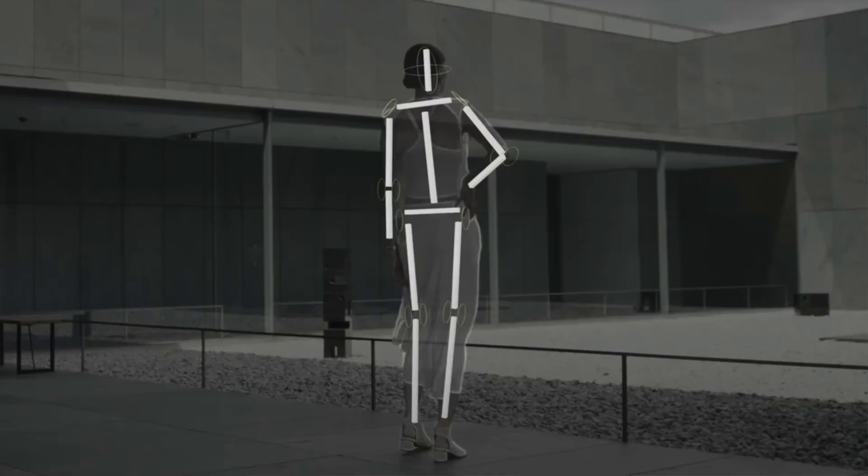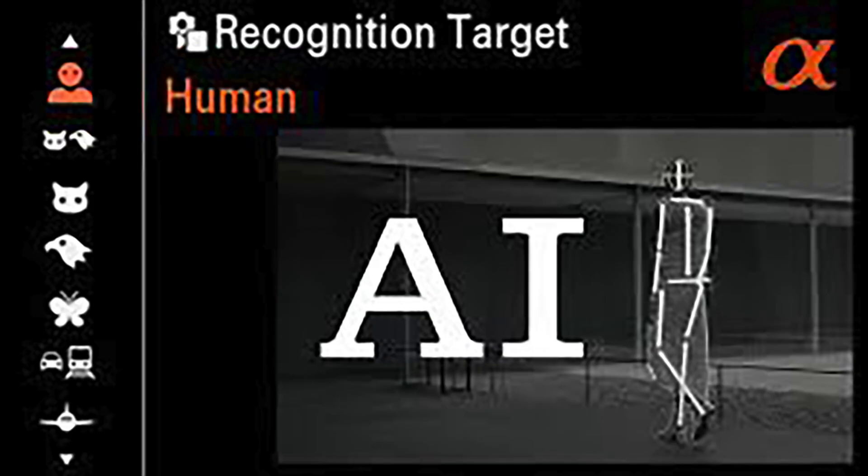The second issue of the A9 III has been mentioned by the Phobloggrapher and it has to do with the human AI tracking. Apparently, the human AI tracking works better on white people than on Black people. This is something Sony has to fix. Nikon did fix it. They have to make sure that everything works for every kind of person.